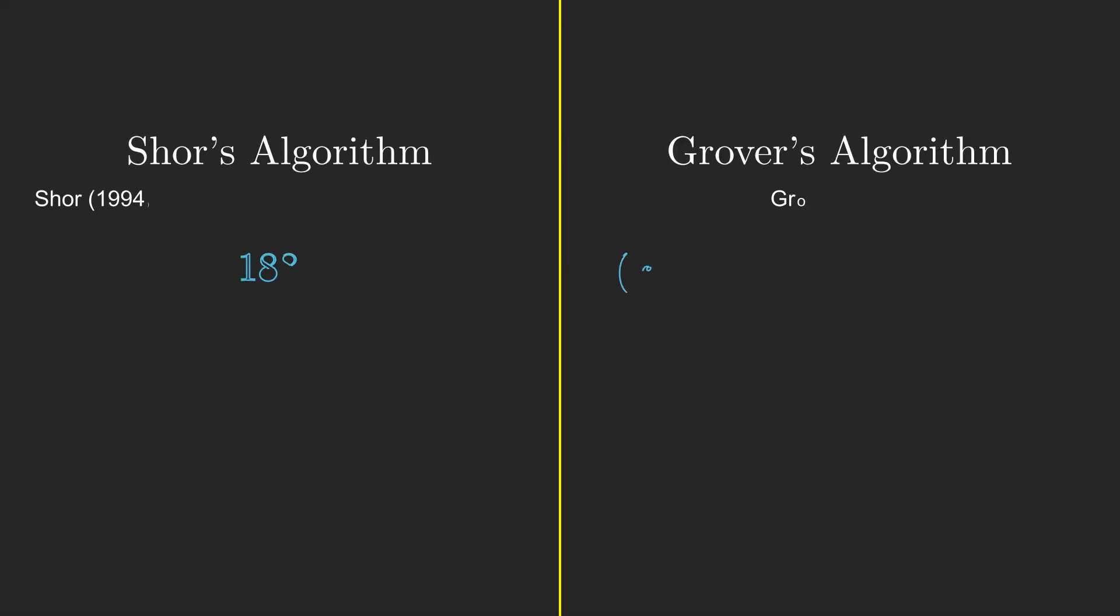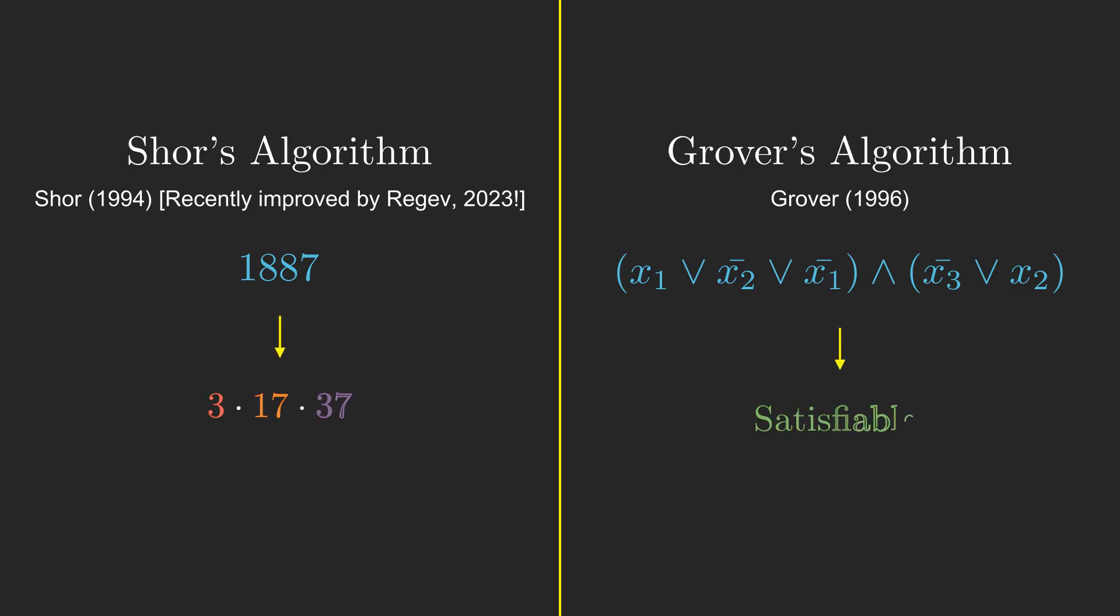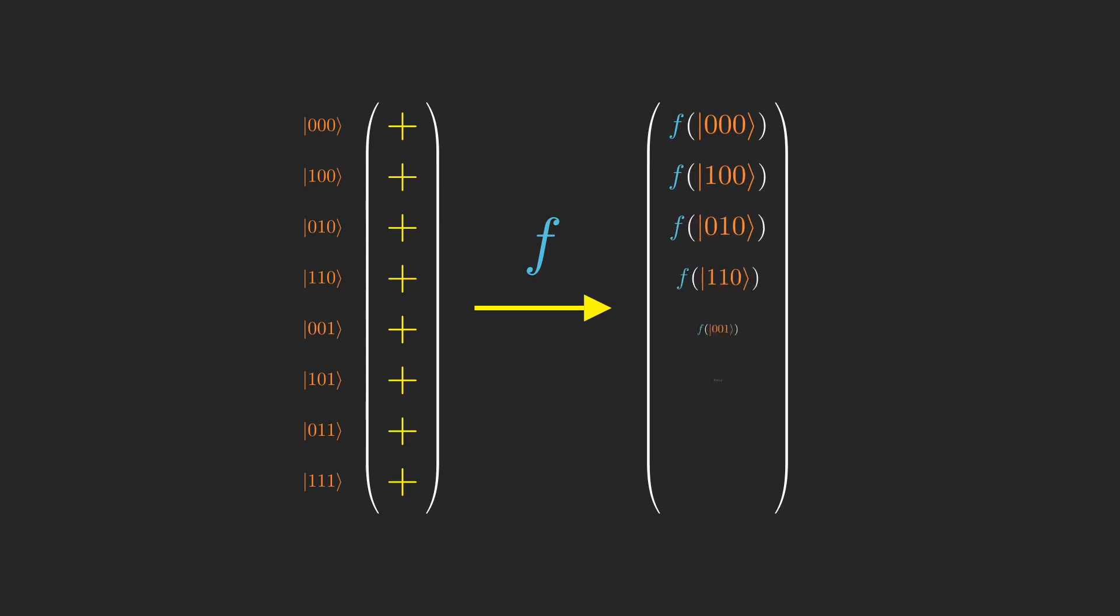And indeed, the two most famous quantum algorithms, being Shor's algorithm for factoring integers, and Grover's algorithm for the canonical NP-complete satisfiability problem, both use the technique of preparing a uniform superposition of all possible inputs to a function, then simultaneously computing that function on all of the inputs and doing some magic cancellation of amplitudes on undesirable states.